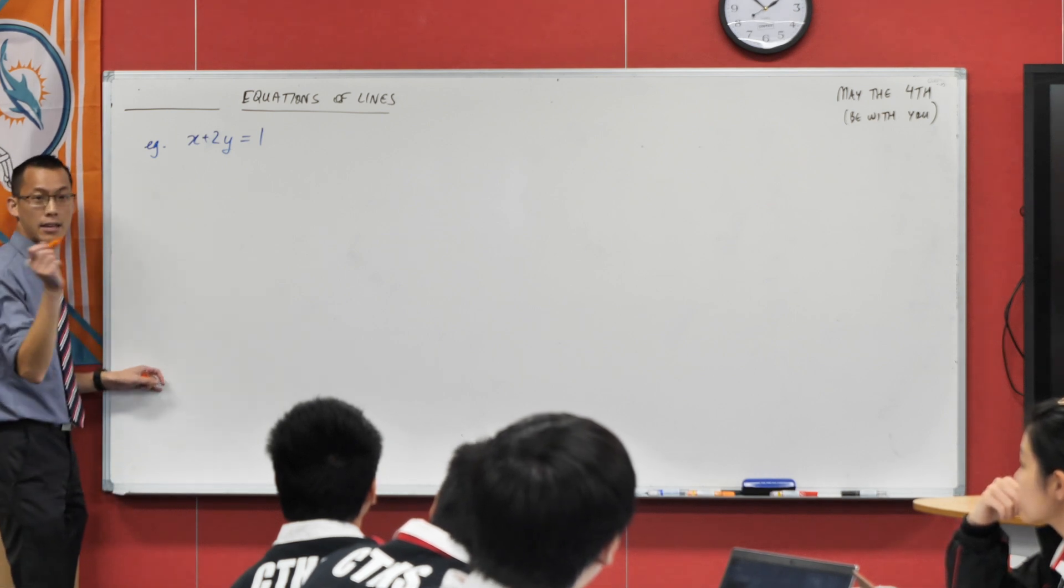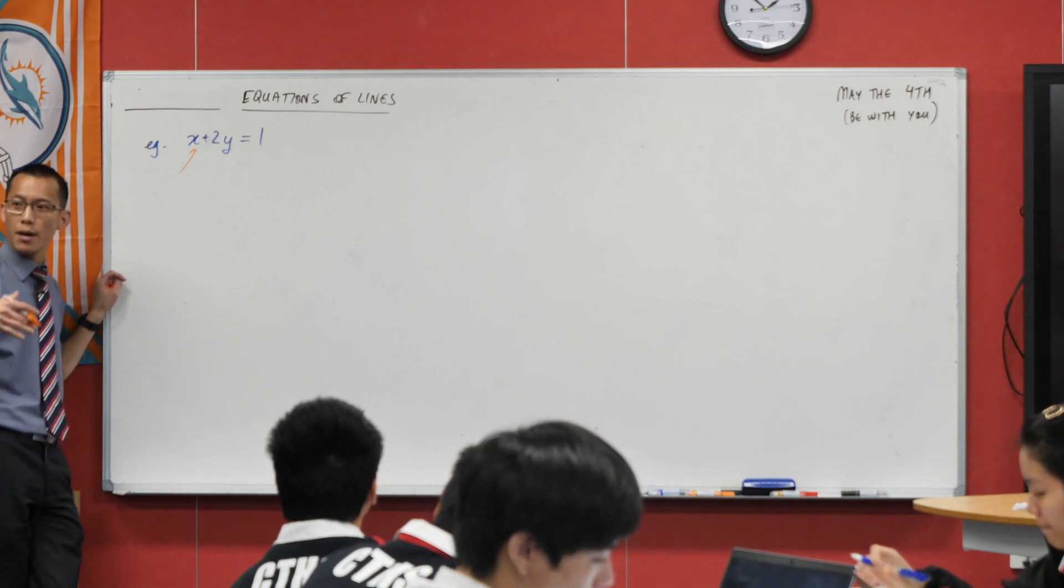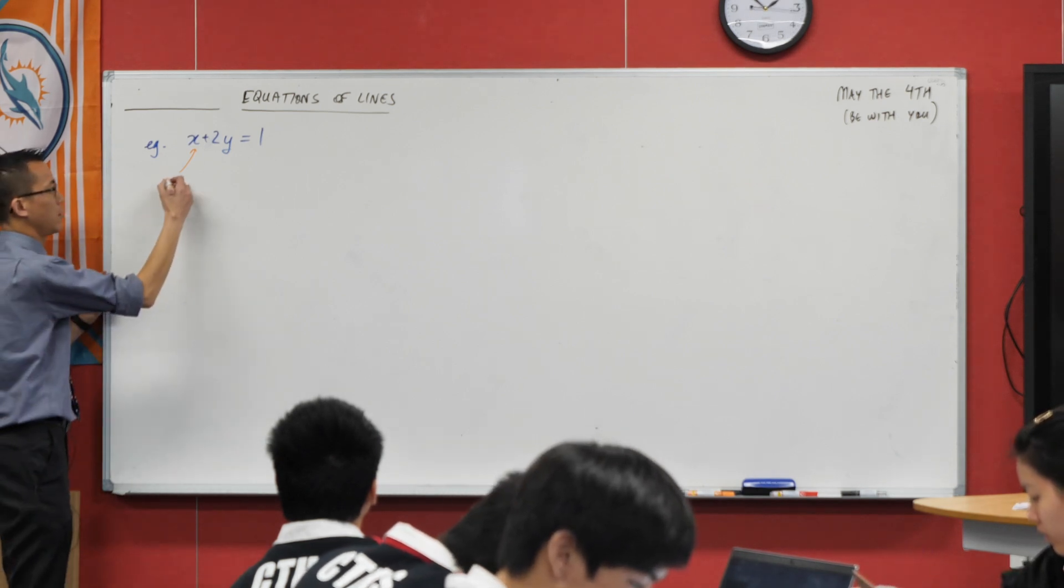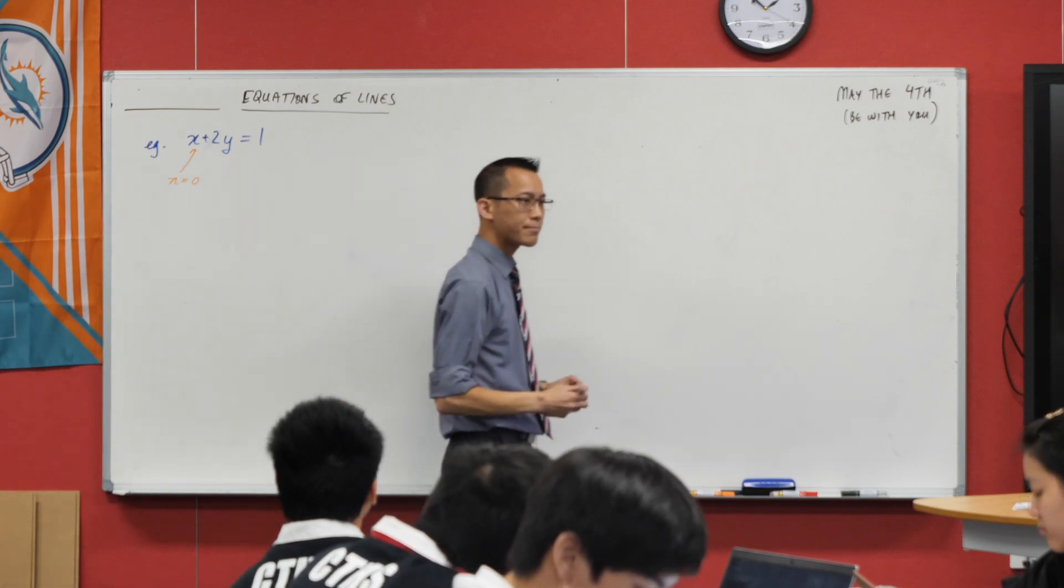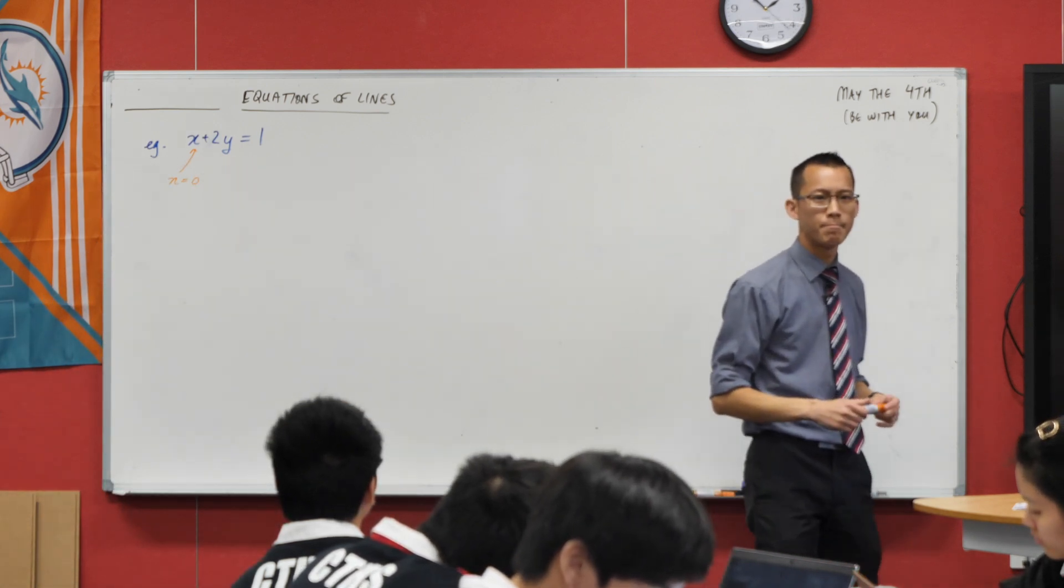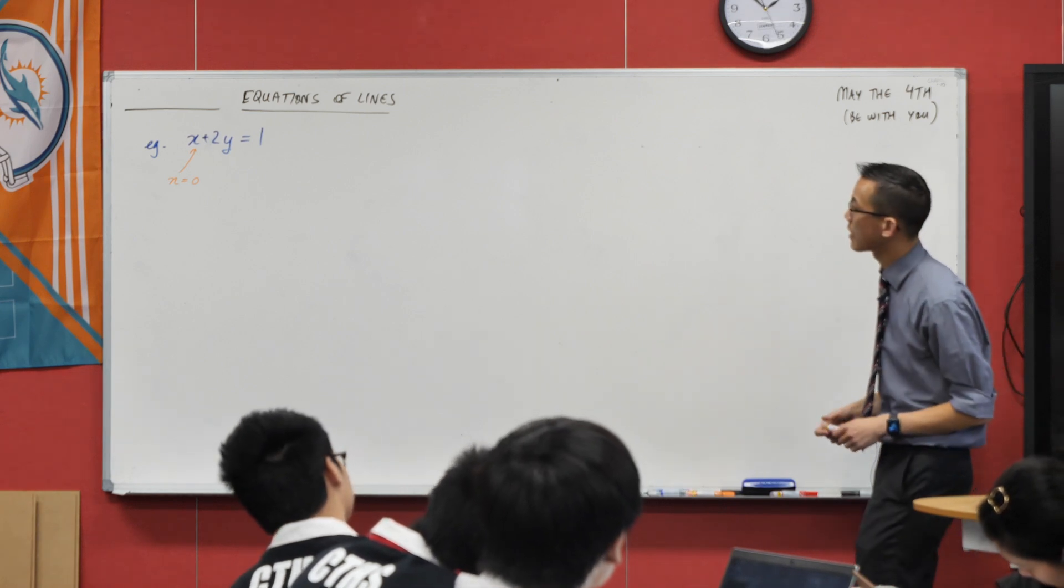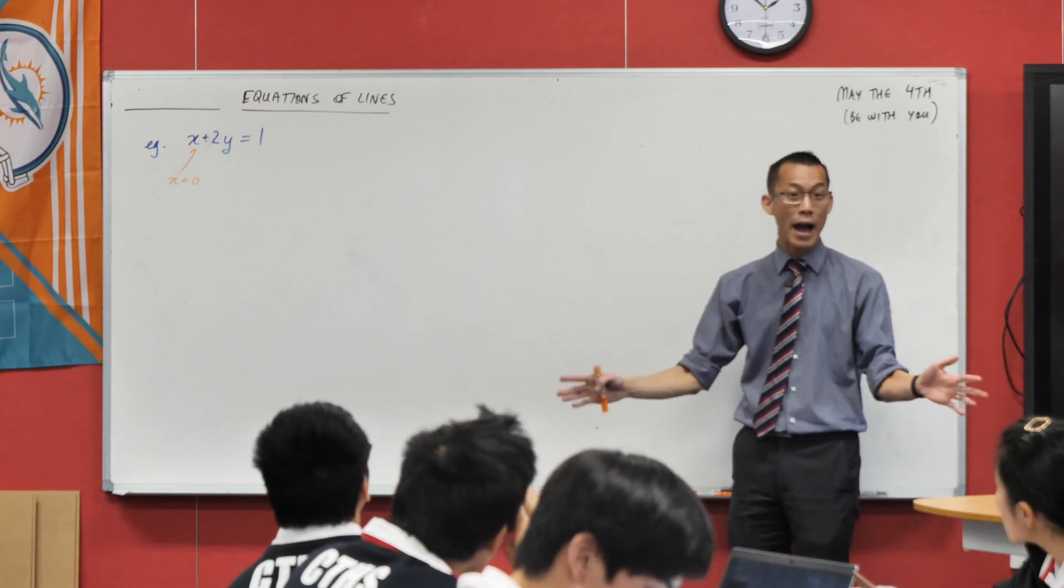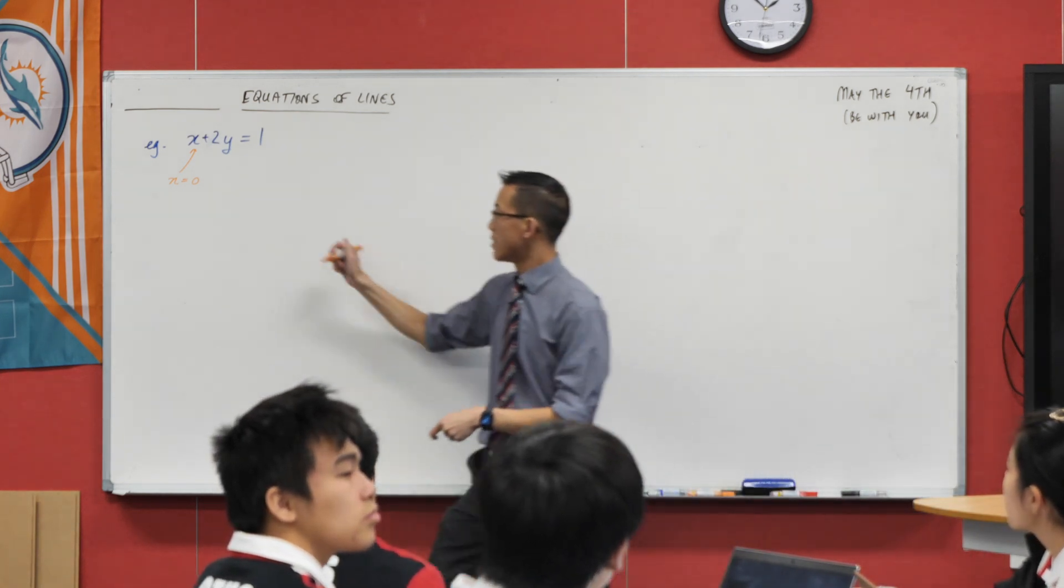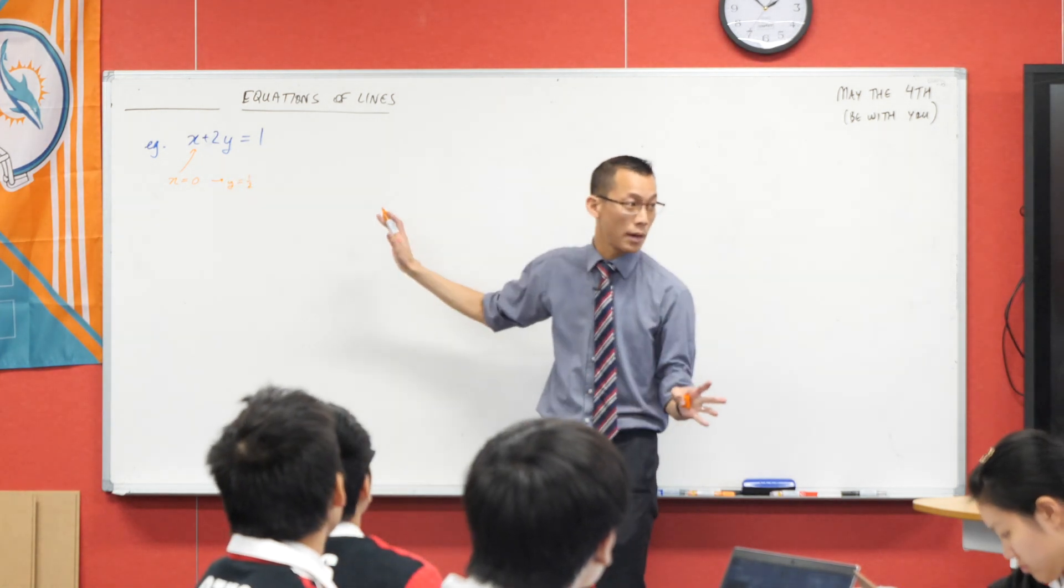Let me try and unpack this for you. If, for example, I took some value of x, I don't know, like x equals 0, and I substituted it in, what would happen to y? There would be one value for it. In this case, I guess it would be a half. And there's nothing else that y could be. If x equals 0, that tells you that y equals a half. No ifs or buts.